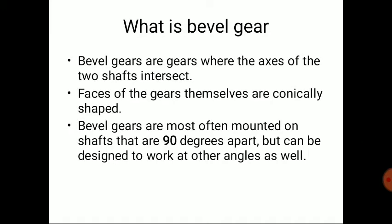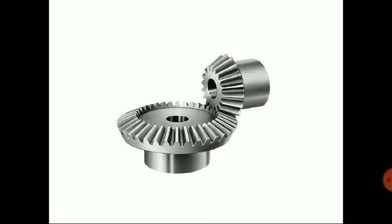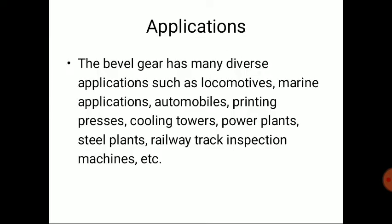In the case of bevel gear, the two axes — the axis of the driver and the axis of the driven gear — intersect each other. The gear shape is conical, and the angle between the two axes is 90 degrees, as shown in the common figure of a bevel gear where the axes intersect.